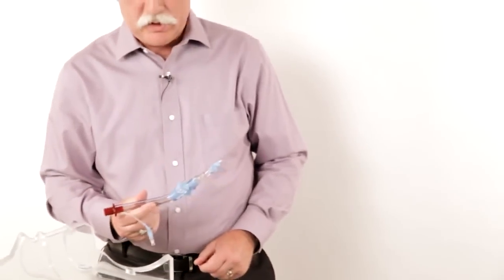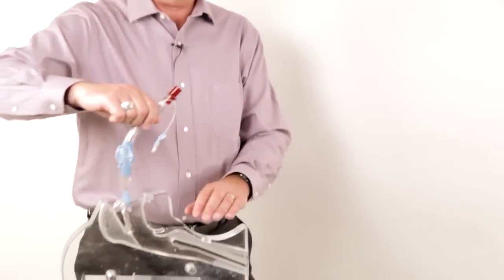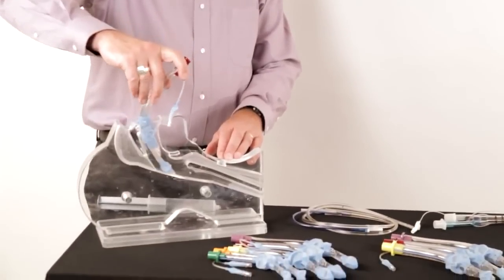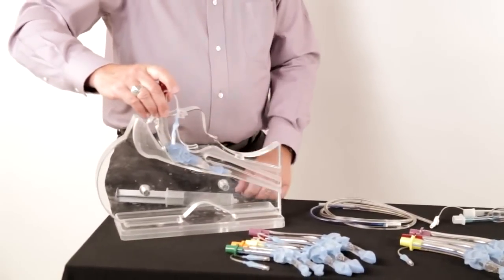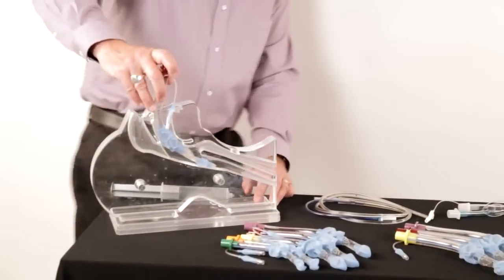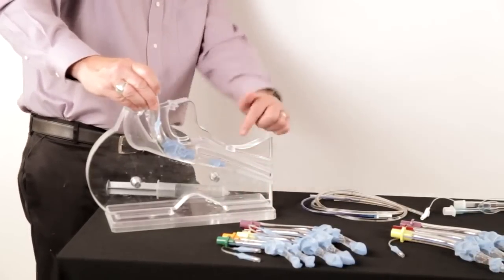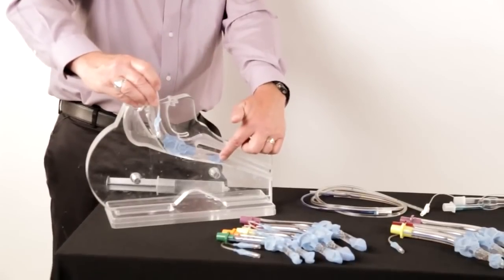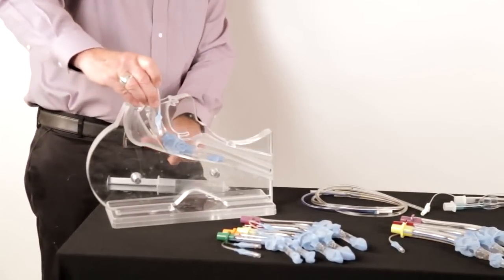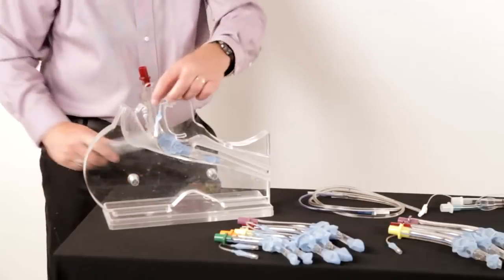So how this works is you're just inserting it blindly. It's a supraglottic device, and you're wanting to put the tip into the esophagus. In this case, it's going around the bend, and the distal balloon is sealing in the esophagus, and the proximal balloon is sealing above the airway in the oropharynx.